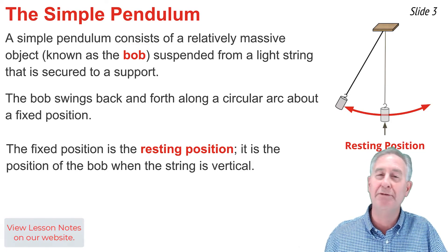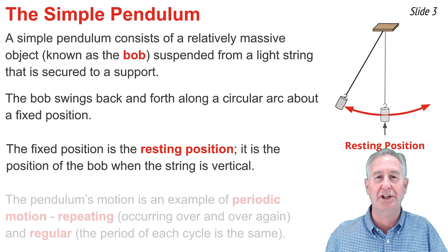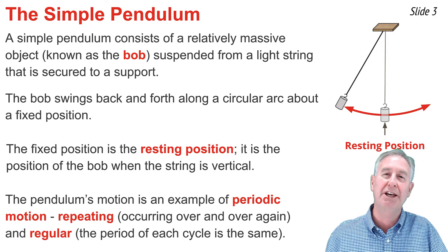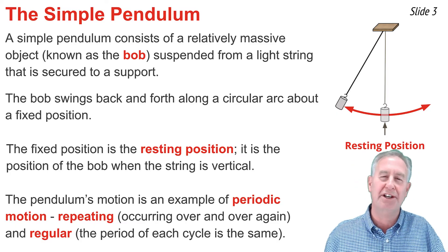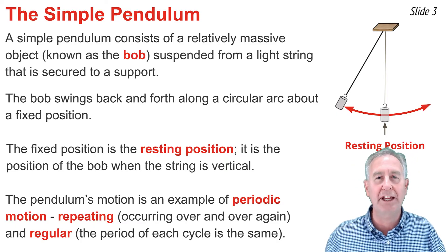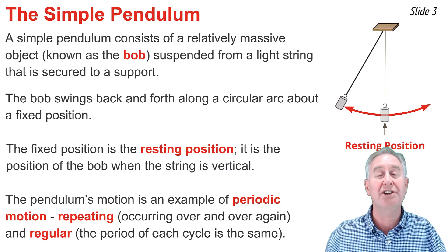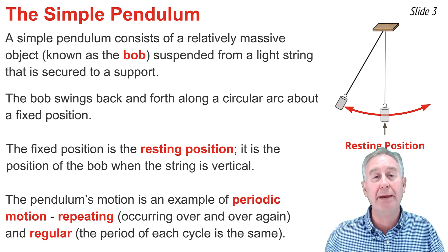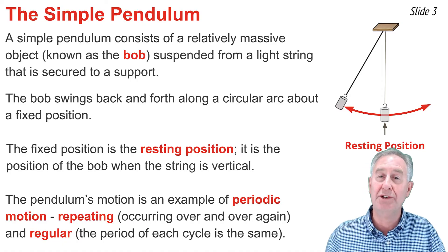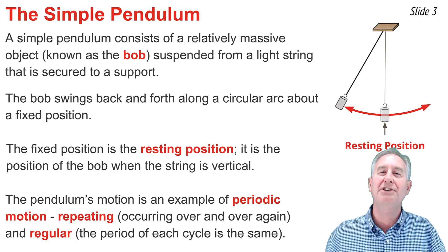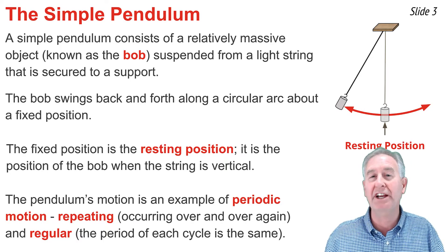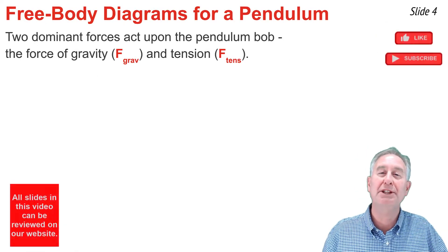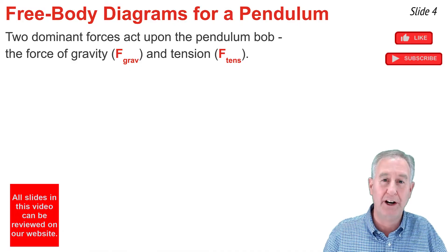The string is typically vertical at the resting position. A pendulum's motion is an example of periodic motion because it exhibits two characteristics. First, it's repeating — it occurs over and over again, cycle after cycle. And second, it's regular. The time it takes to complete a single cycle, known as the period, is the same amount of time one consecutive cycle after another.